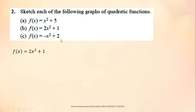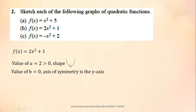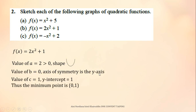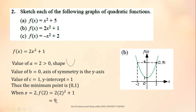For B, the function is 2x² + 1. The value of A is greater than 0, so we get a U-shape graph. Since B equals 0, the axis of symmetry is the y-axis. The value of C is 1, so the y-intercept is 1. Thus, the minimum point is (0, 1). We substitute x = 2 into the function to get the value of y, which is 9. This is how the graph will look like.